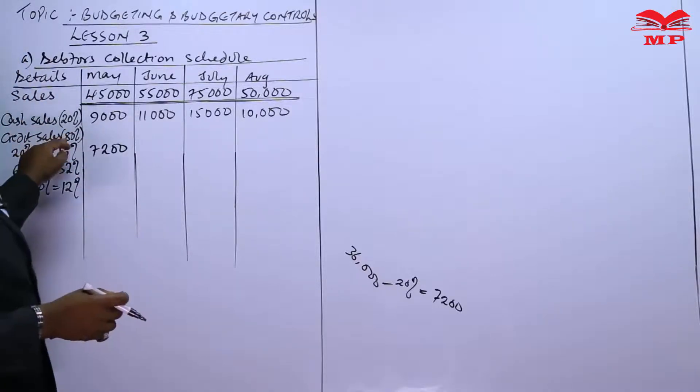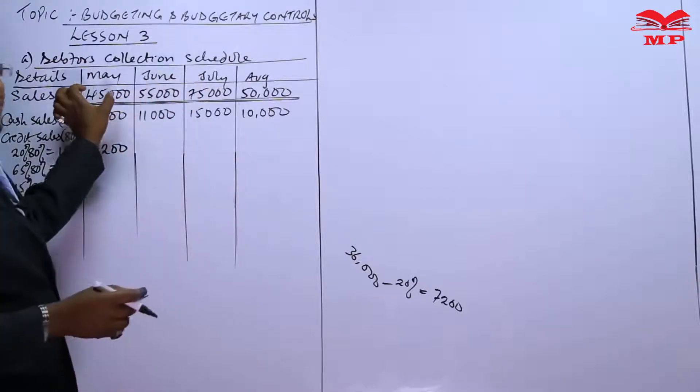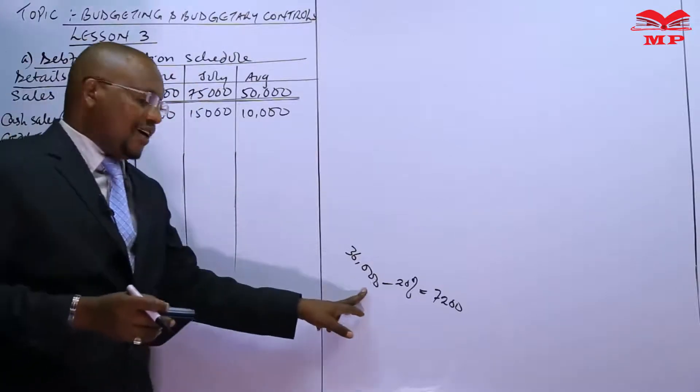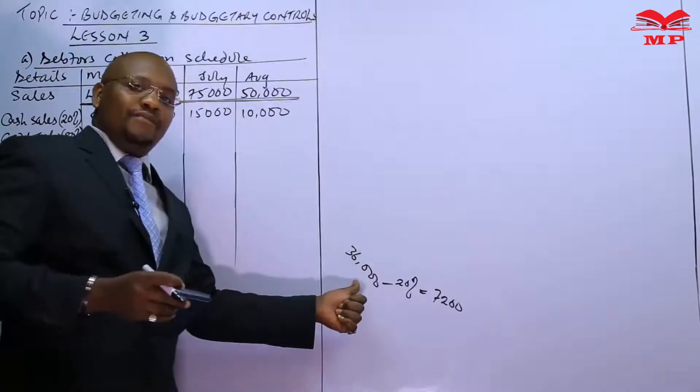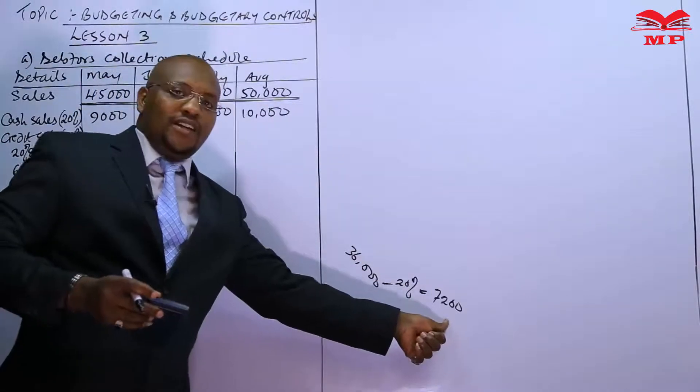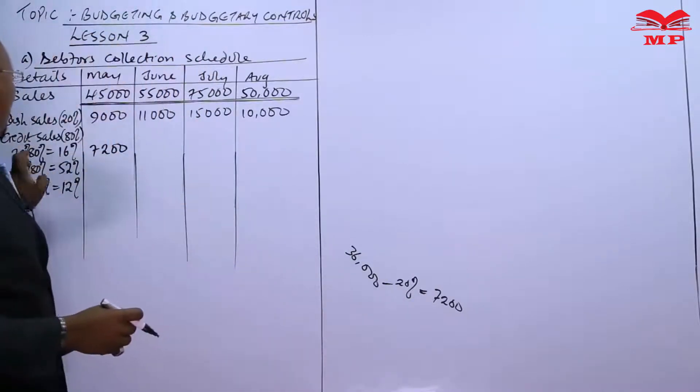So I repeat to emphasize that is just like taking first of all 80% of the total sales which is 45, 80% is 36,000, then 20% of this 36 is 7,200. So I can work out on the percentages, I say 20% of 80%, which is 16%.